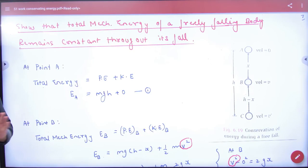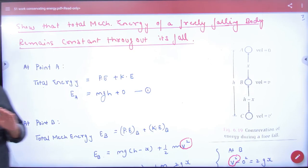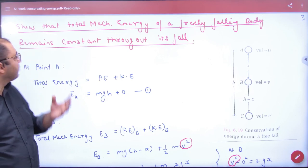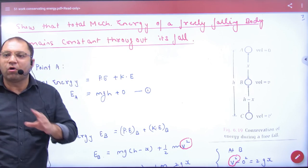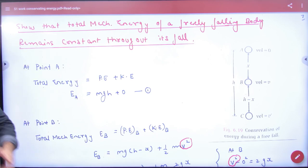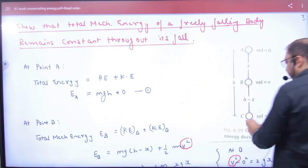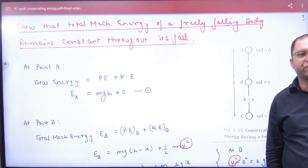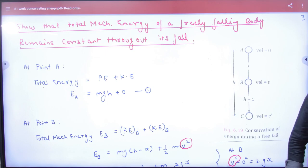Show that total mechanical energy of a freely falling body remains constant throughout its fall. So you have to prove that if any body is down here, then total energy remains constant. Let's prove this. Let's do this.